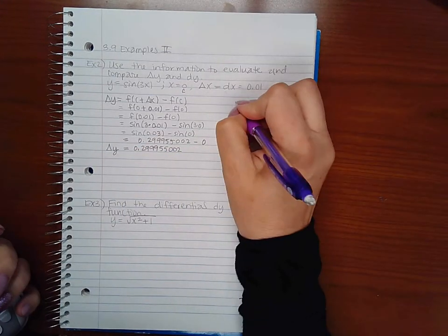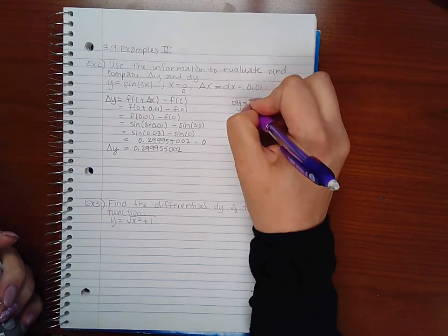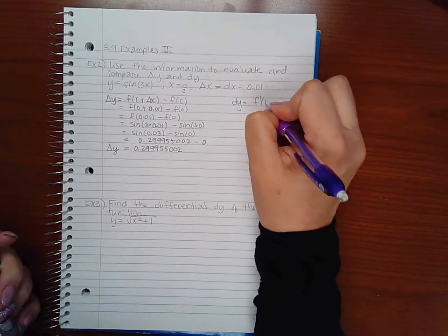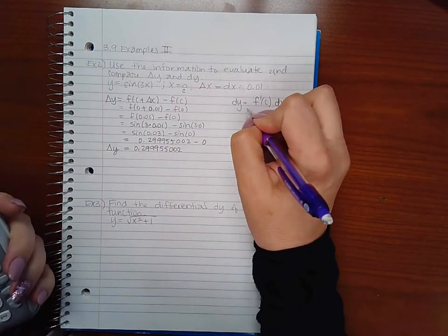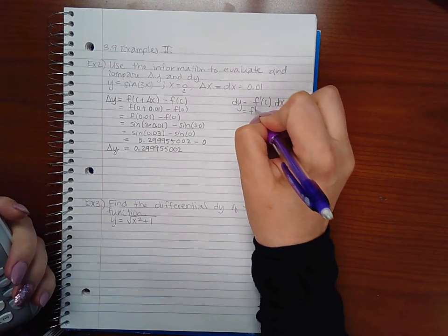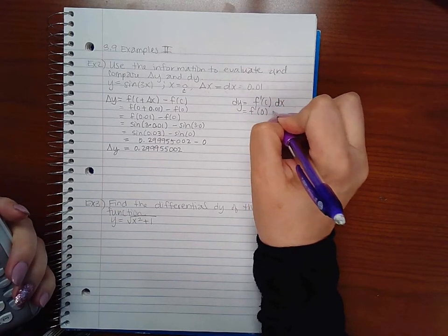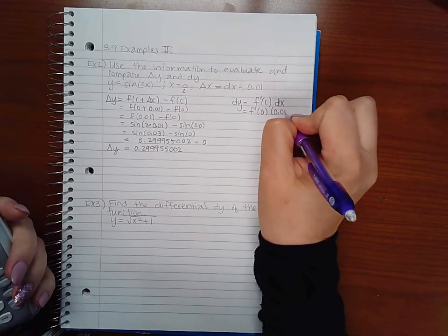Now for dy, we have to use a different formula. That is f prime of c times dx. So in our case that would be f prime of 0 and dx is 0.01.